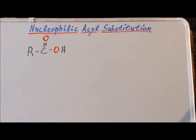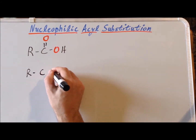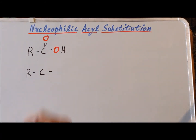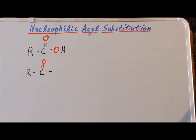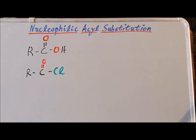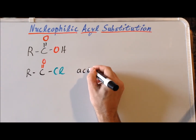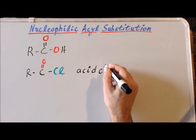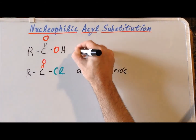One of the important derivatives of carboxylic acids has the following general structure. We replace the hydroxyl group with chlorine, and this is the class of compound which we call an acid chloride, as opposed to the carboxylic acid.